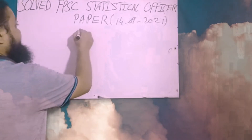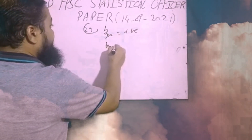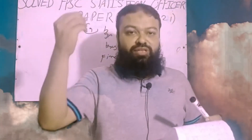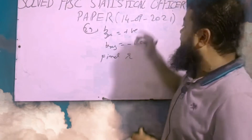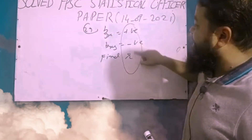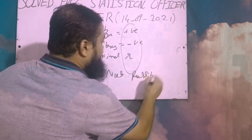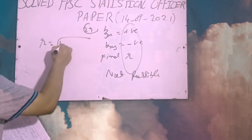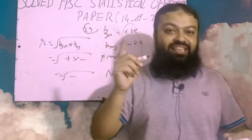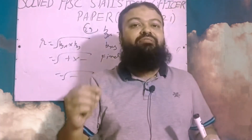Question number twenty-nine: given two regression coefficients, if b_yx is positive 1 and b_xy is negative 1, find r. The sign of both regression coefficients must be the same for r to exist. If b_yx is positive and b_xy is negative, then r = √(b_yx × b_xy) = √(+1 × −1) = √(−1), which is impossible. So the correct option is 'not possible.' For future papers: b_yx, b_xy, and r all have the same sign.